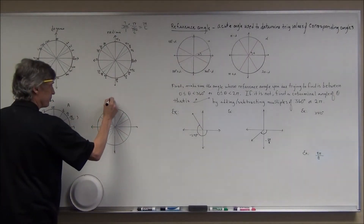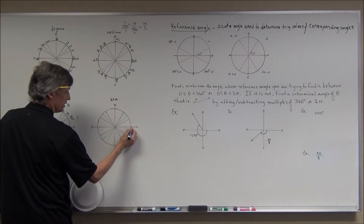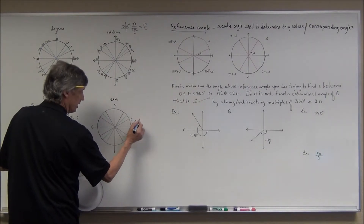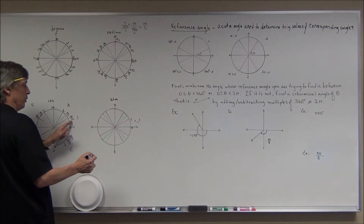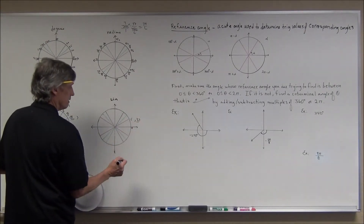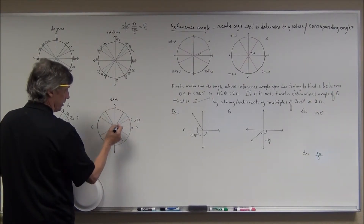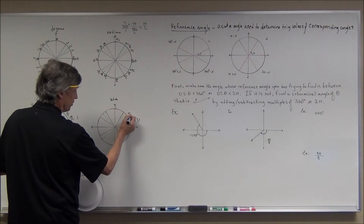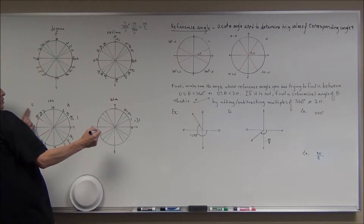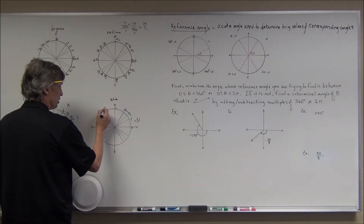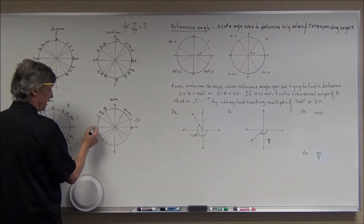For sine, remember the point at zero is (1, 0). Sine is the y-value, so sine of zero is 0. Going up: 1/2 — you can see it's about halfway up since the radius is 1 — then √2/2, then √3/2, then 1 at 90°. Sine is positive in the second quadrant too, so it just reverses: √3/2, √2/2, 1/2, then back down to 0.